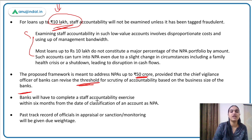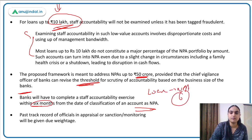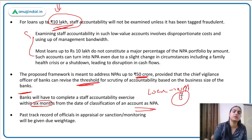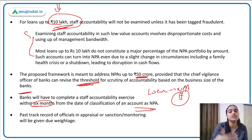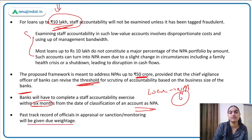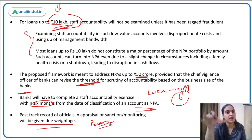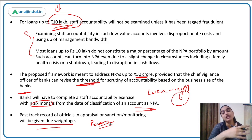The proposed framework will address NPAs up to ₹50 crore, and the thresholds can be revised based on the size of individual banks. Two more important points: banks must complete the staff accountability exercise within six months of an account turning NPA — identifying who was responsible, whether remuneration needs to be clawed back, etc. Additionally, past records of officials in appraisal or sanction monitoring will be given due weightage — if an official has a history of malicious intent, they will be penalized more; if not, relaxation can be given.